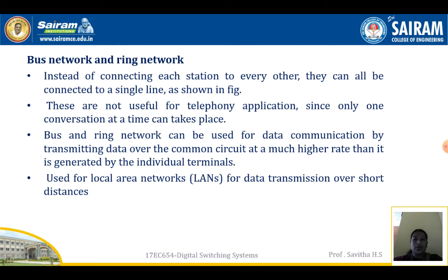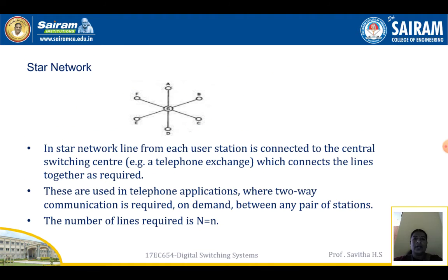Bus and ring networks are used for local area networks (LANs) for data transmission over short distances. In a star network, the line from each user station is connected to a central switching center. For example, a telephone exchange which connects the lines together as required. You can see in the diagram that S is the central switching center.